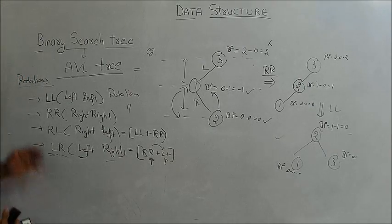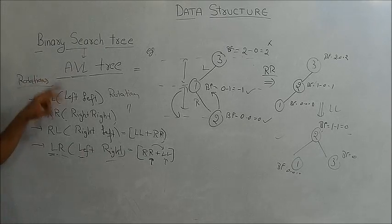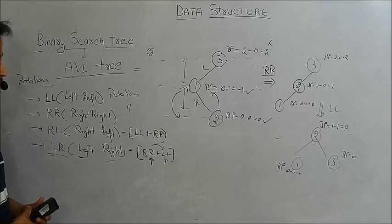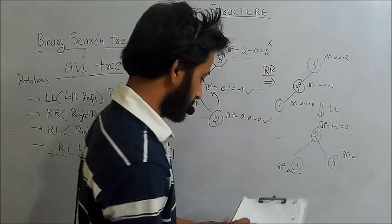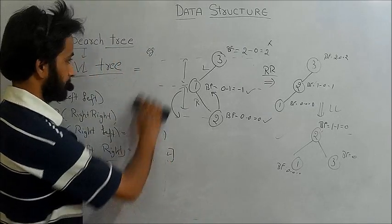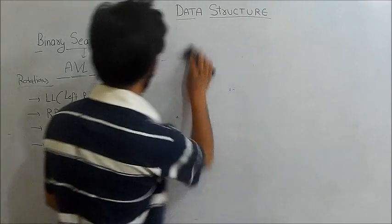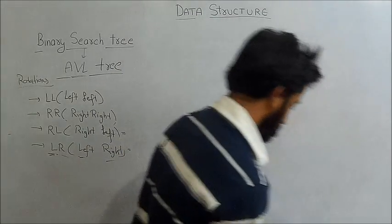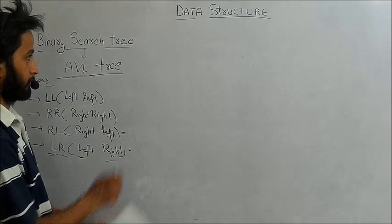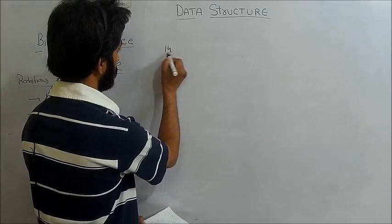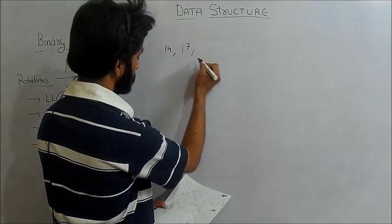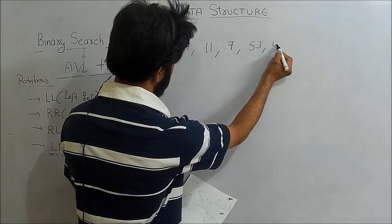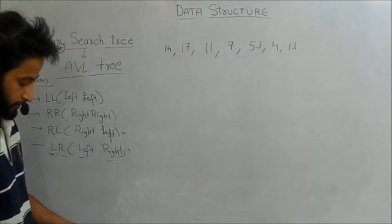This is about rotations in a binary search tree to make it an AVL tree. Let us understand AVL tree rotations with the help of one example. The nodes to be inserted are: 14, 17, 11, 7, 53, 4, and 13.